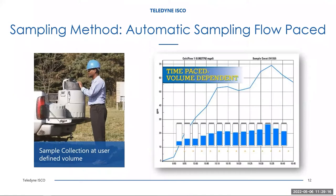This is an example of a time-paced program where we are adjusting the volume delivered to the bottle based upon the flow rate occurring at the moment the sample was collected. So when the flow is at lower levels, the amount of volume in the bottle is less; when the flow is at a greater amount, the bottle is fuller. The difficulty with this is if you do not know what the flow is going to be at that site, it could be very easy to under- or over-pace that sampler. If you design a flow program based for a lower flow than what actually occurs, all the bottles may be near full rather than being truly flow-weighted over that sampling interval.